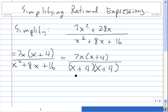And finally, 4 times 4 gives us the 16 that we need, so x plus 4 times x plus 4 is the correct factorization of x squared plus 8x plus 16.